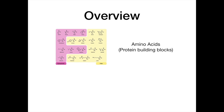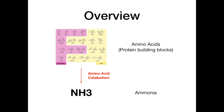When you ingest protein, or when you break down protein in your body, you're breaking them down into amino acids, because amino acids are the protein building blocks of everything we put together in the body. When amino acids get catabolized or broken down, they form ammonia. Normally ammonia is not a problem for a healthy body, but a problem occurs when you can't get ammonia out of the body, because it builds up to toxic levels.